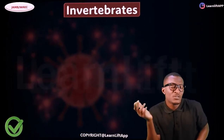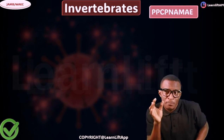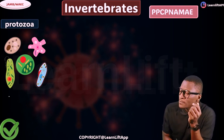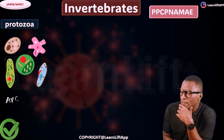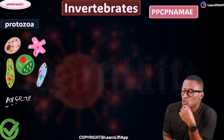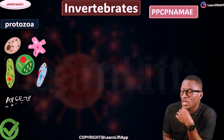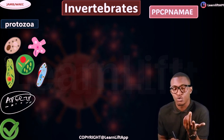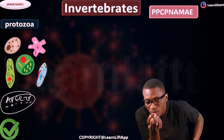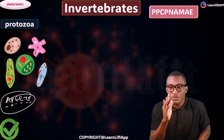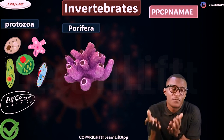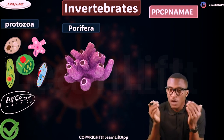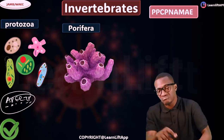Now let's give a picture of each. Starting with invertebrates — PCP NAMIA — the first one is Protozoa. Under Protozoa we have the Amoeba, Paramecium, Euglena, Volvox, Chlamydomonas, Trypanosoma, and Plasmodium. We're going to talk about all of them — this is just an overview. The second P is Porifera, which are your sponges. A-level will not talk much about sponges — just know it exists.